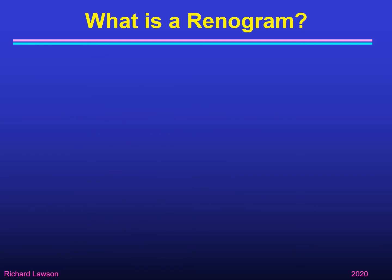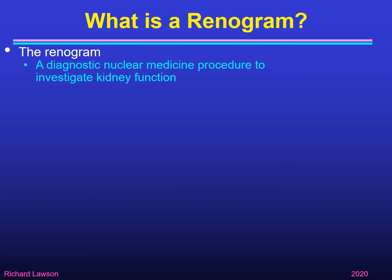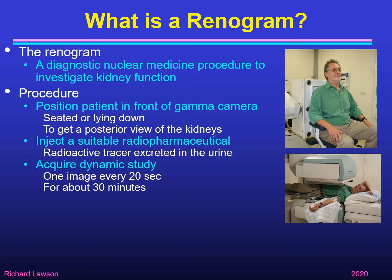So first of all let me remind you what a renogram is. The renogram is a diagnostic nuclear medicine procedure to investigate kidney function. The patient is positioned in front of a gamma camera, either seated or lying down, so we can get a posterior view of the kidneys. Then we inject a suitable radiopharmaceutical — a radioactive tracer that is taken up by the kidneys, passes through the kidneys, is excreted in the urine, and passes on into the bladder.